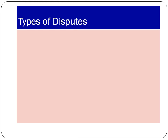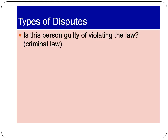One type of dispute courts settle is over criminal law. The dispute that comes to the court is whether or not a person is guilty of violating the law. For example, an individual might be charged with burglary, but the person charged may dispute that claim — they say, 'I'm innocent, I did not enter into somebody's house and take their things.' The court settles that dispute and tells us whether or not that individual is guilty as charged.